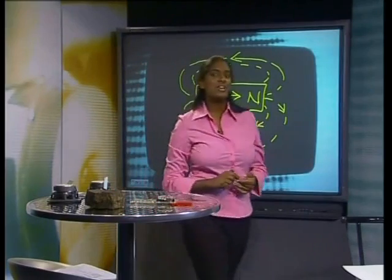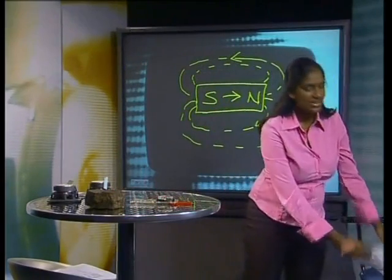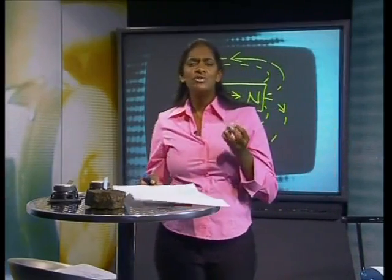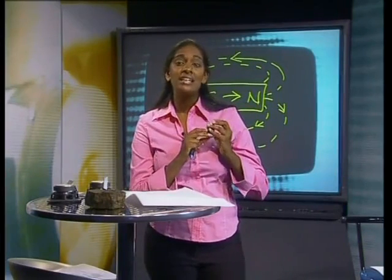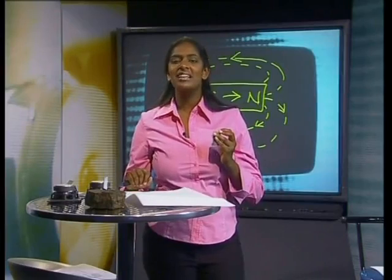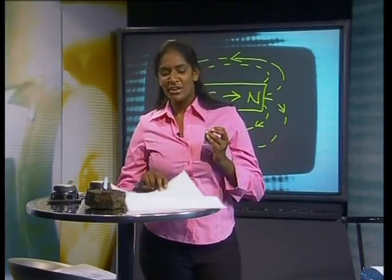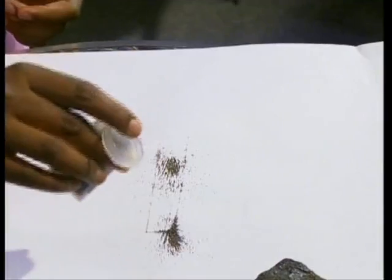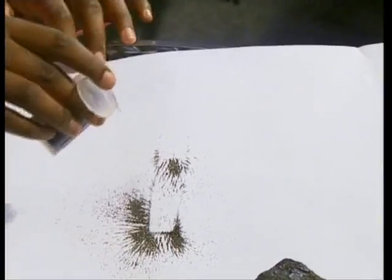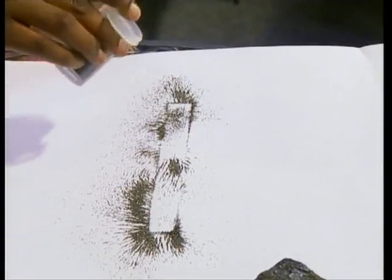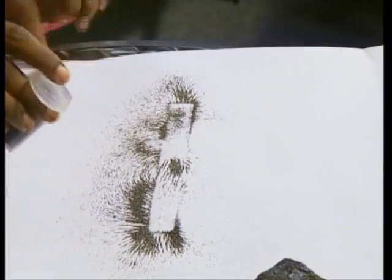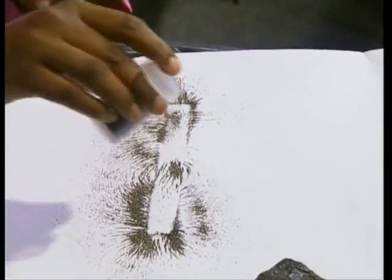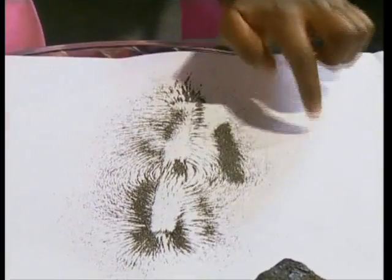This magnetic force field does not only have an effect on free-moving magnets, but on magnetic materials too. Here I have some iron filings — this is iron that has been cut into very, very small pieces. This is an ideal magnetic material to demonstrate the presence of a magnetic field. Watch how I do it. First of all, I place a piece of paper over a bar magnet. Next, I sprinkle iron filings over the paper. These bits of magnetic material align themselves along the magnetic field. Can you make out the pattern that is forming?